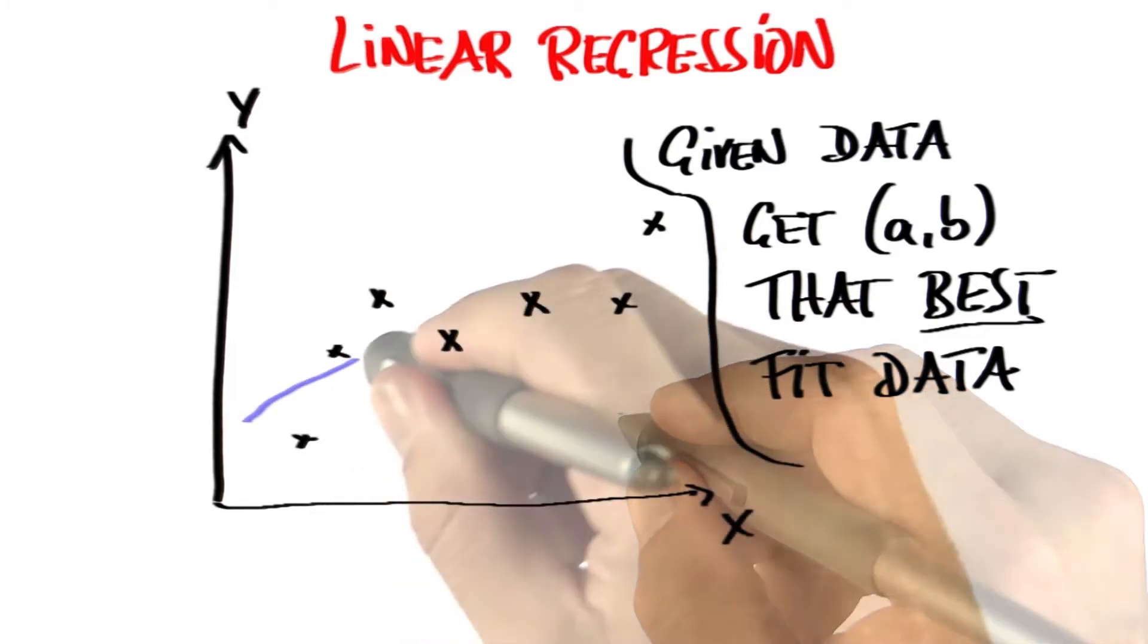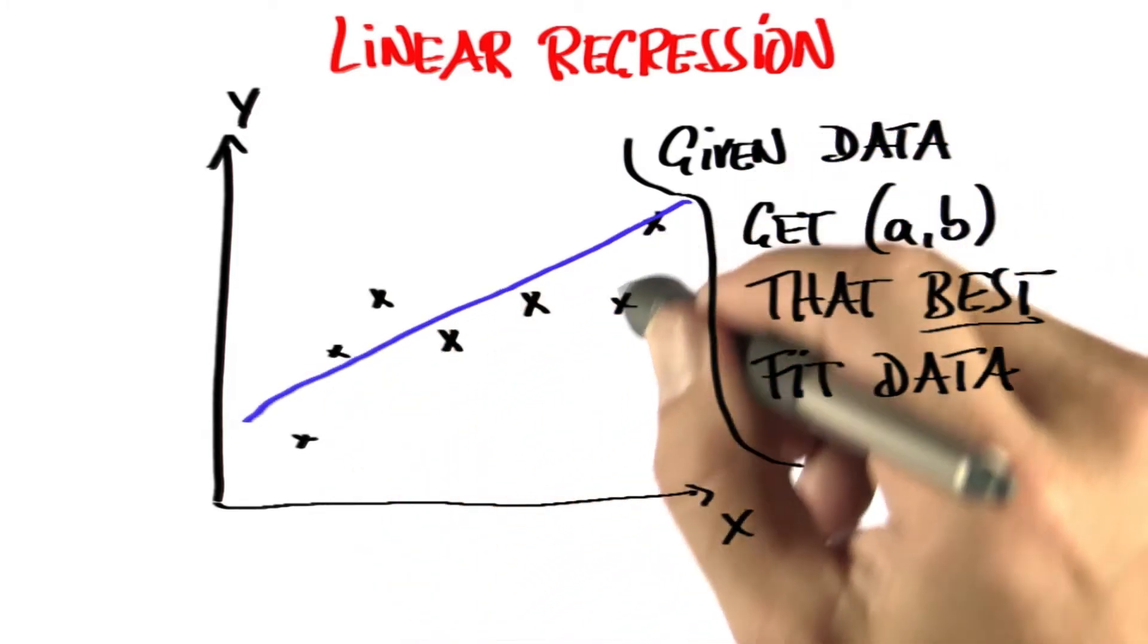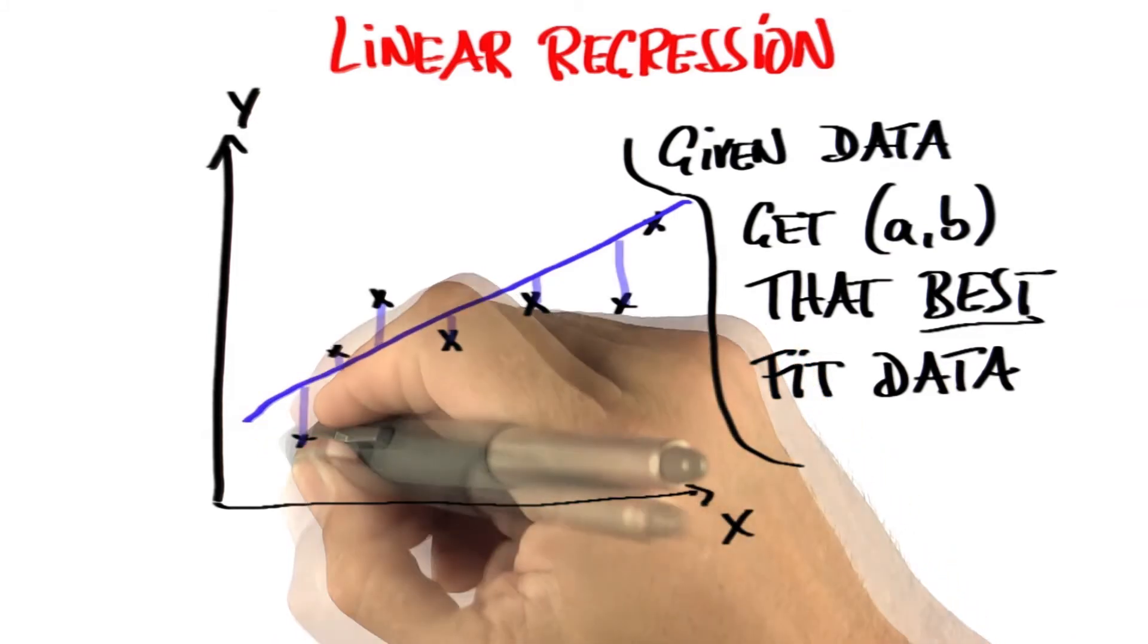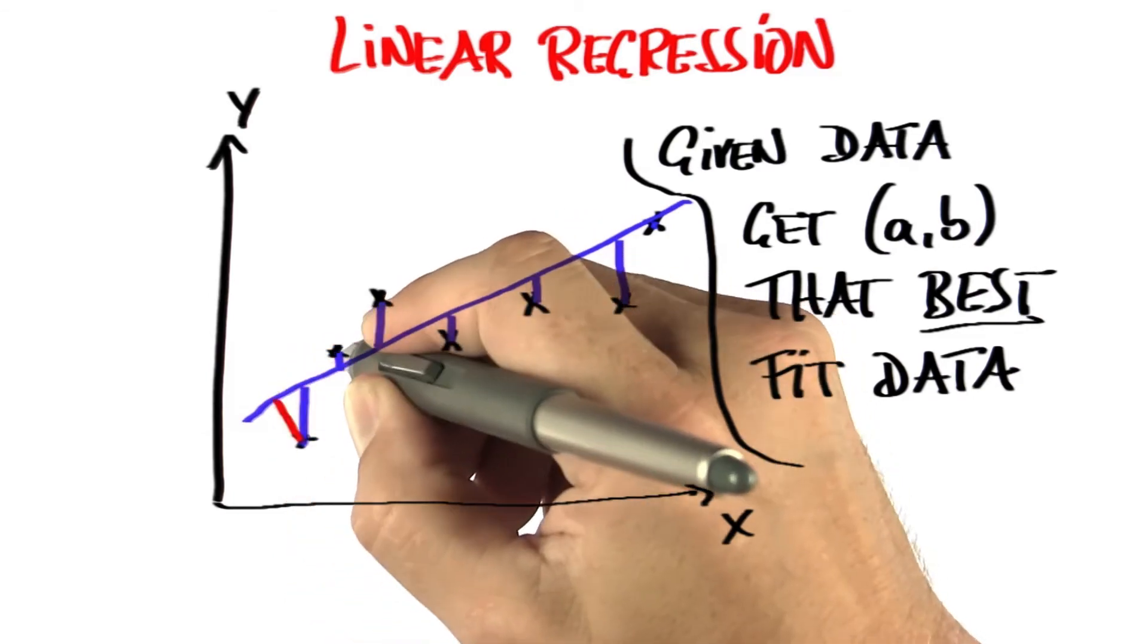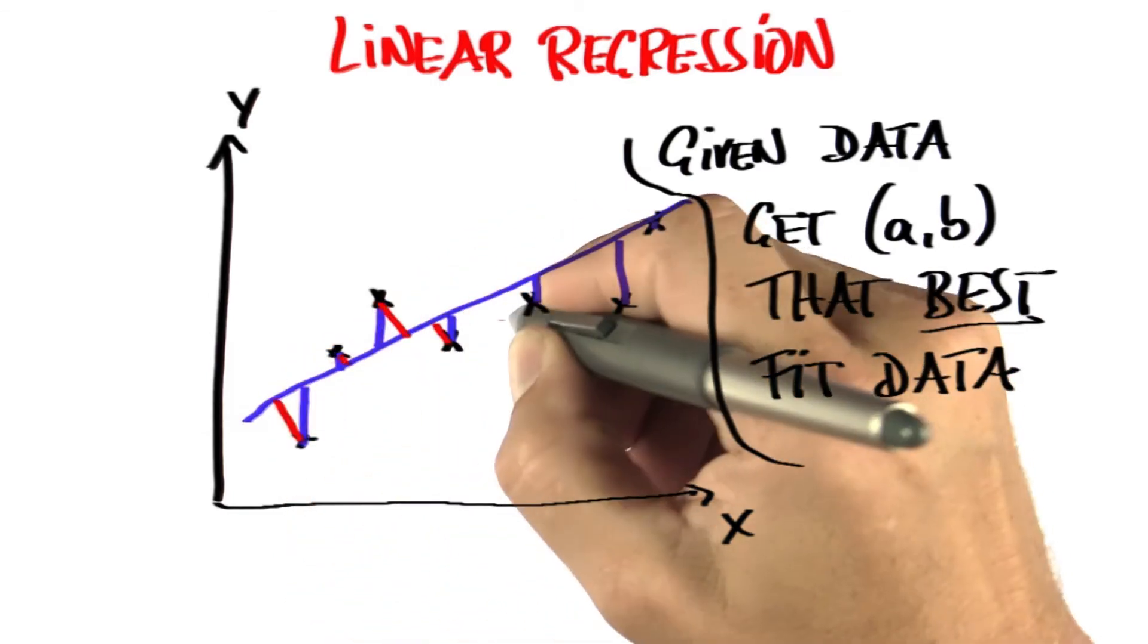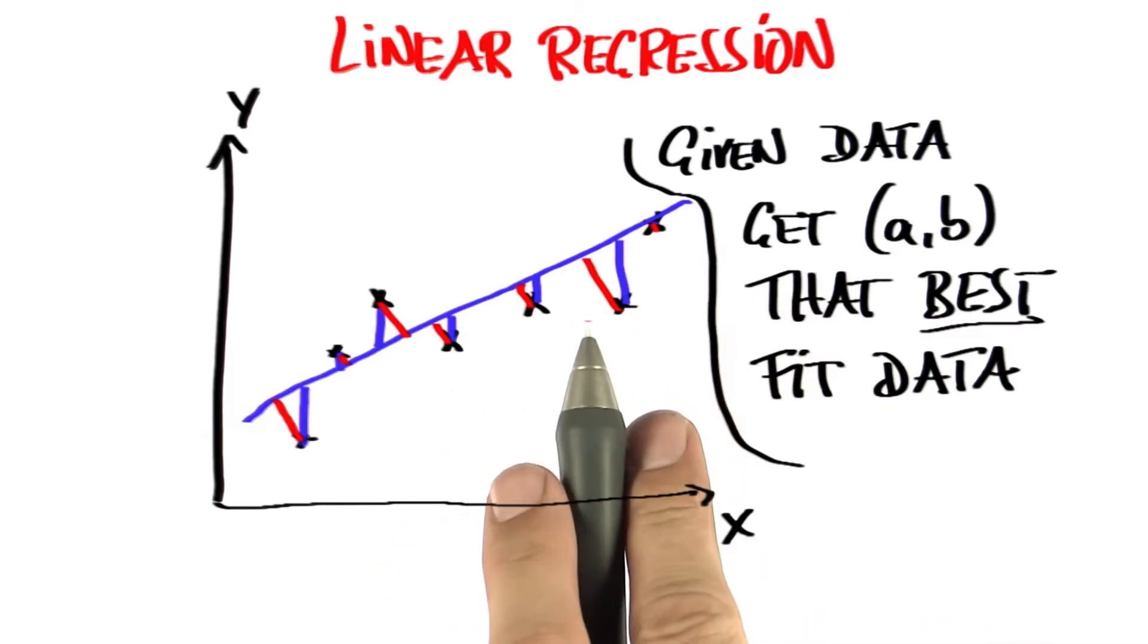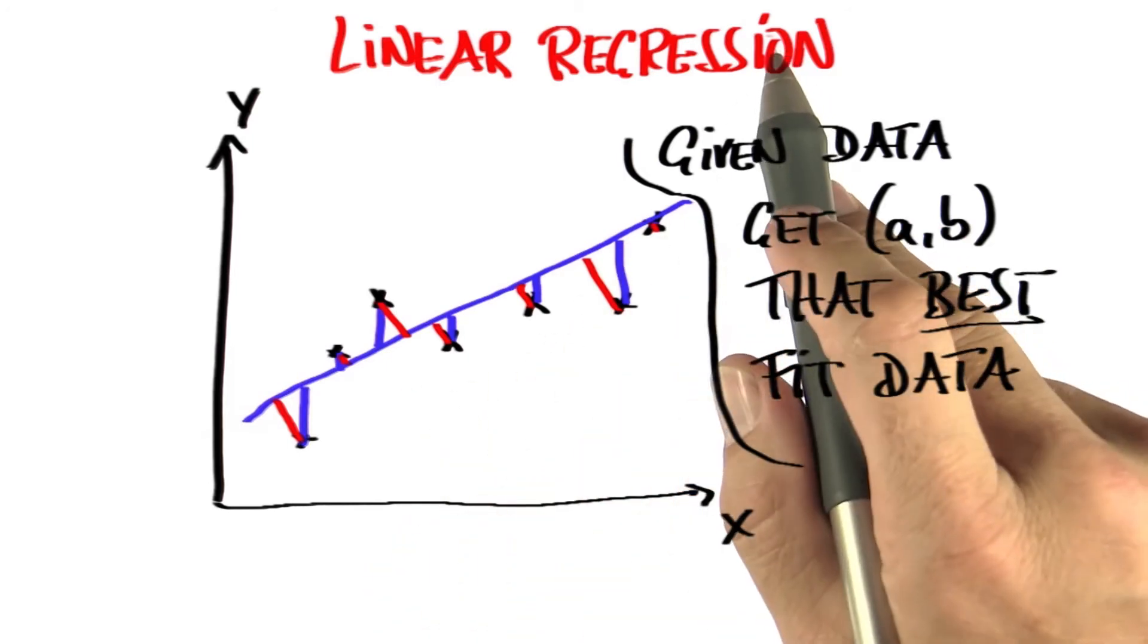So in finding the best fit, we're trying to find a line that minimizes the difference between the data and the line in the y direction. And that's somewhat counterintuitive. You'd normally think the distance is given by these lines over here in red, and that is the shortest distance irrespective of x and y.